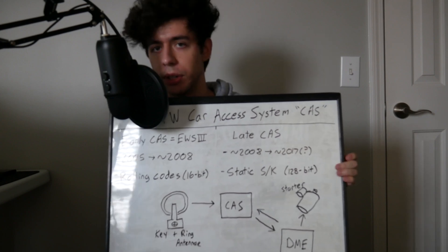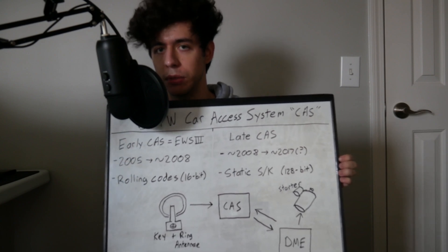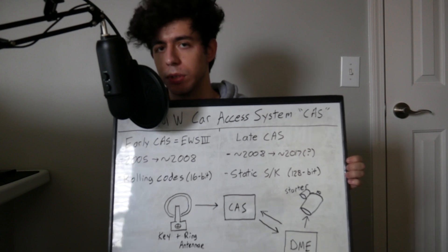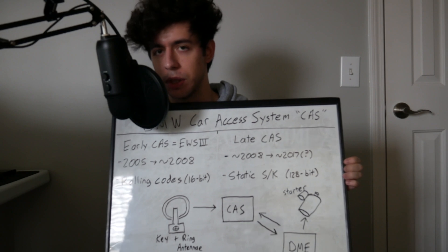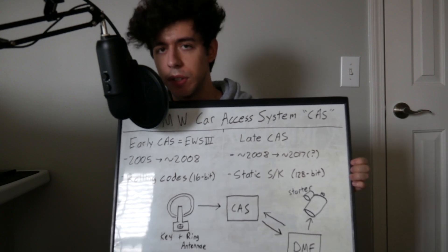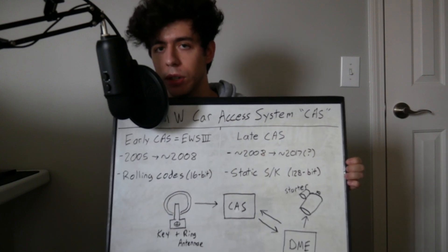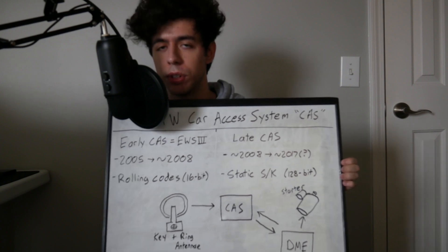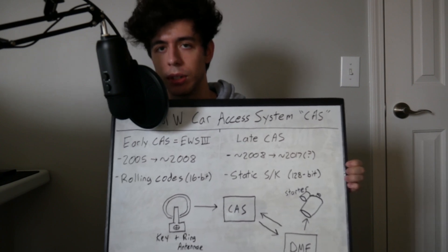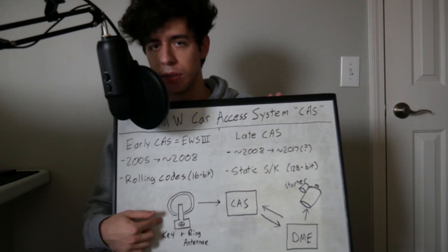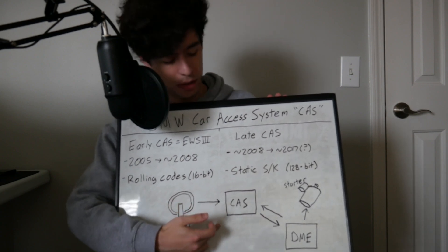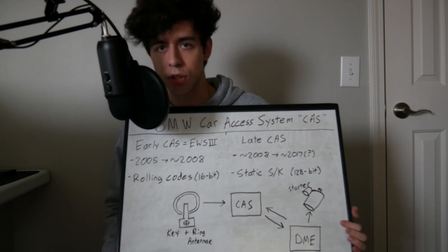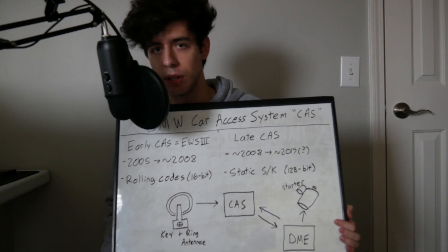Now let's take a look at the later generation CAS implemented in what I can only assume are the facelifted models of each generation. These CAS modules function very similarly in that it checks between the CAS module and the DME to make sure a code matches, then lets you start the car. The biggest difference is that while the early generation stores 16-bit codes in a cycling table, the later generation stores a single code called the secret key — a 128-bit serial code that gets checked every time you start the car. As a quick visualization: your key inserted into the ignition barrel brings power to the ring antenna, which communicates with the CAS module, which then communicates back and forth with the DME, exchanges codes to verify they are equal, and if identical the DME sends a signal to the starter and allows you to crank over the car.